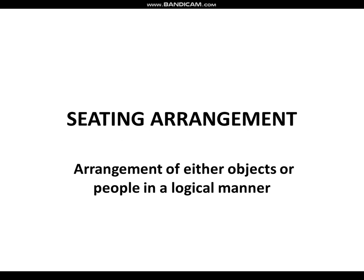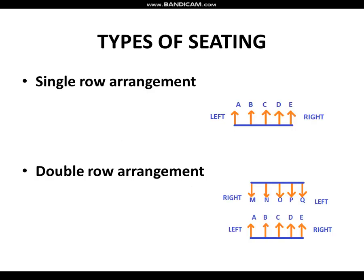Seating arrangement is nothing but arranging the seats of certain people or objects in a certain direction based on some logic. We have a few types. The first type is single row arrangement — people facing or standing in a straight line towards one direction, like north, south, east or west. For example, in a prayer hall, how students will be standing — that is one example of single row arrangement.